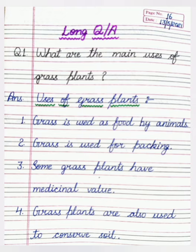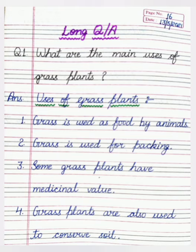Next we will do the long question answer. The question is: what are the main uses of grass plants? You will mention the heading 'Uses of Grass Plants' then start your answer. First point: grass is used as food by animals. Second point: grass is used for packing. It is a very beneficial way of packing because by using this method we can avoid the use of plastic and stop the pollution caused by plastics.